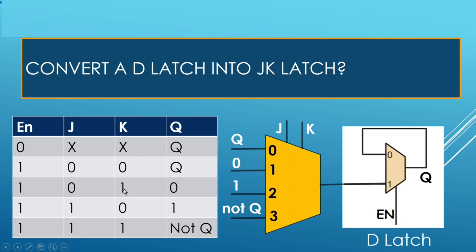When J is 0 and K is 0, output should be 0. When J is 0 and K is 1, this line is going to path to the output — let us make it 0. When J is 1 and K is 0, output should be 1; input line 2 is going to path to its output, and let us apply it to 1.